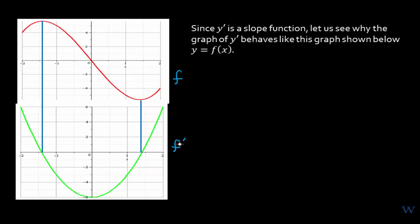Let's look at the slopes of the lines tangent to the curve. Starting from the left we see a positive slope, then we hit a zero slope because we're changing direction. On this whole interval we see that the red curve is sloping downward because it's decreasing, so all the lines tangent to the red curve have negative slopes.